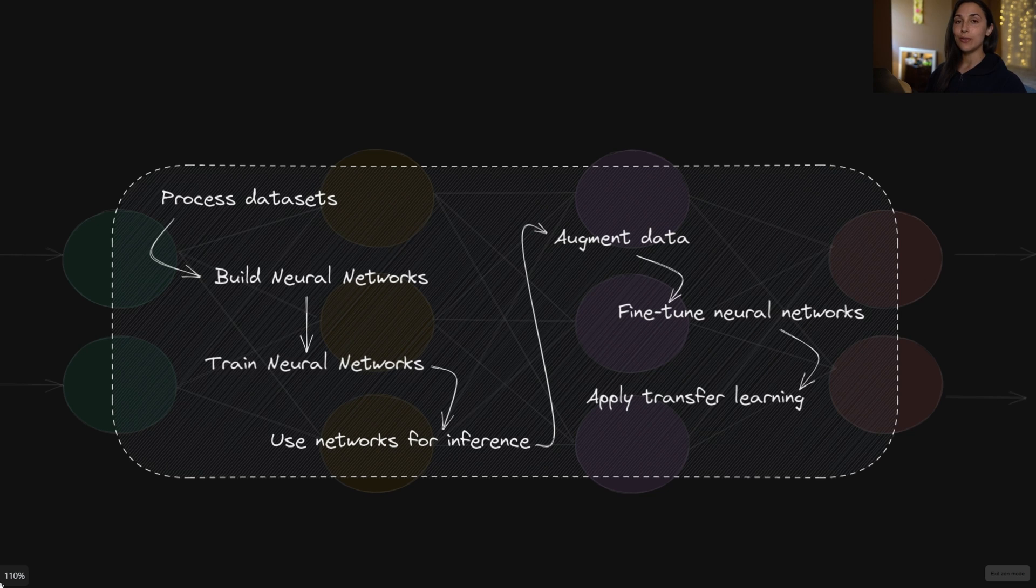Throughout the course, we've learned how to leverage the TensorFlow library along with its integrated Keras API to do so many different things, including processing datasets, building and training neural networks, using those networks for inference, and augmenting datasets, fine-tuning neural networks, and applying transfer learning from a pre-existing network to another one.